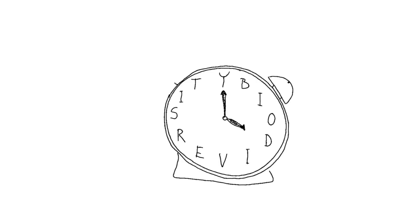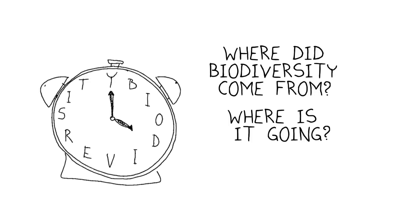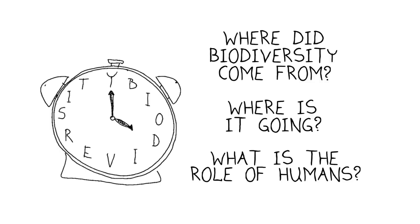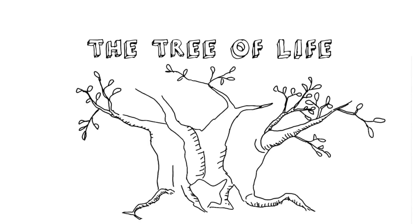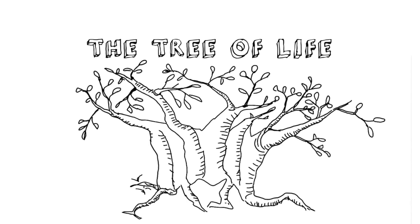We always want to know: where did biodiversity come from, where is it going, and what is the role of humans in the future of these patterns? Lineages allow us to look at the evolutionary history of different species. The study of evolutionary lineages is also the study of the tree of life. Scientists use that tree metaphor to depict actual relationships among organismal groups in a branching diagram.